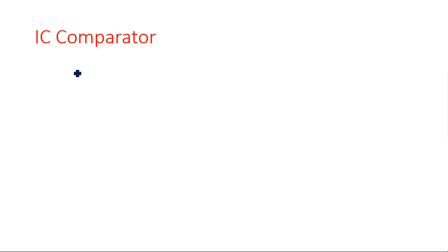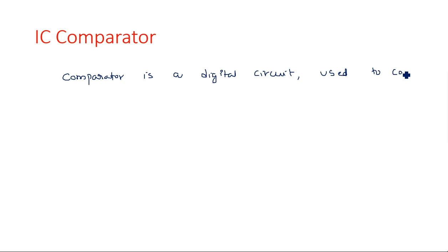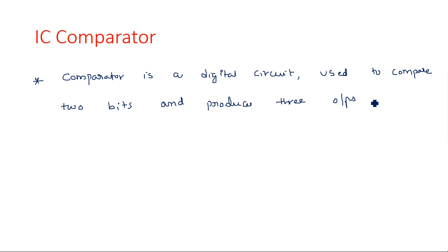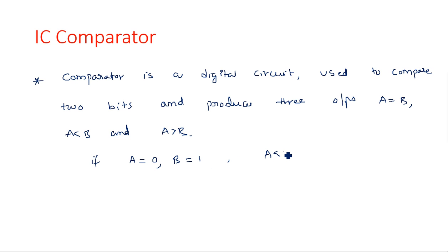A comparator is a digital circuit used to compare two bits and produces three outputs: A equal to B, A less than B, and A greater than B. All three outputs are always available, and the corresponding one will be highlighted. For example, if A is equal to 0 and B is equal to 1, then the result is A less than B, so A less than B output is 1 and the remaining two outputs are 0.